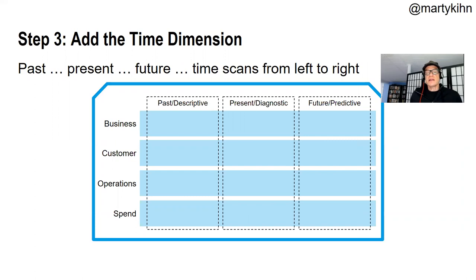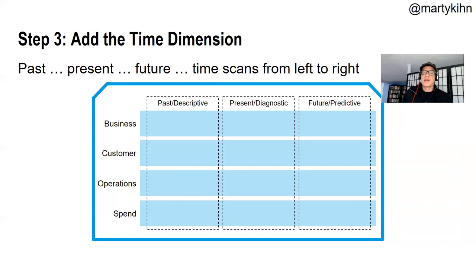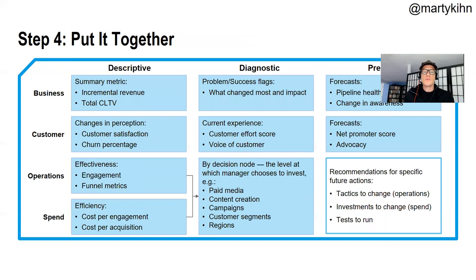Then the next thing is the time dimension. In our culture we read from left to right, so I recommend putting things that describe the past on the left, things about the present in the middle, and things that are more predictive on the right. I have these categories: descriptive, diagnostic, and predictive. Descriptive analytics is what happened — like a report on a campaign from last week or last month. Diagnostic is what's happening now — key measures telling you how your operation is running at the moment, like fill rate or email open rate. And future is trying to predict things like pipeline.